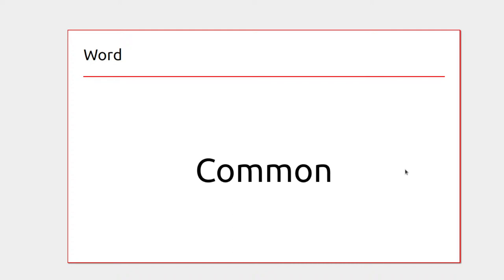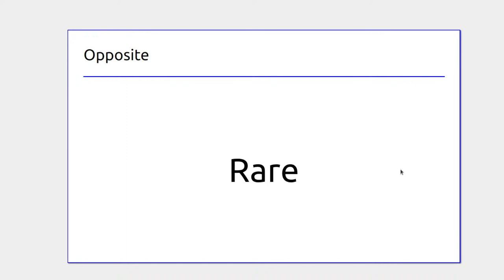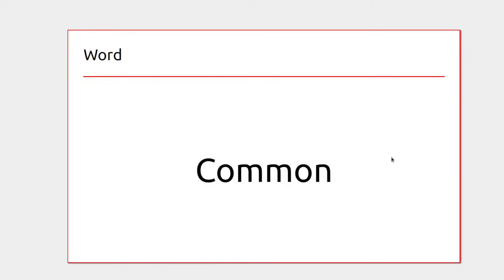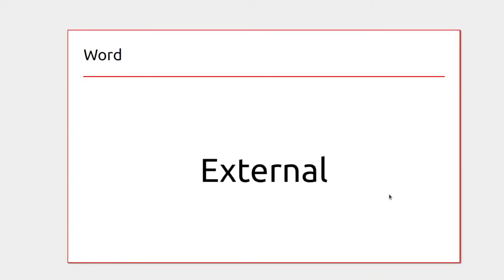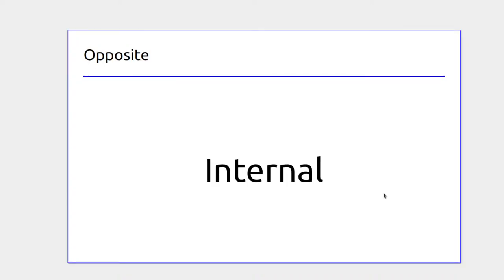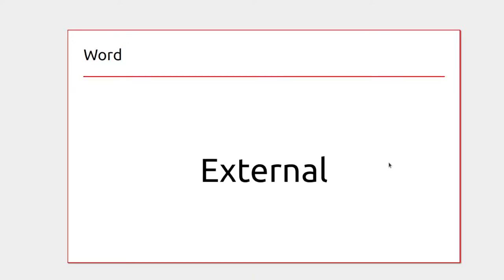For things that are common, they're very frequent. Things that are rare are hard to come across — a common thing might be a plate, while rare might be a diamond wedding ring. External is outside of something and internal is inside — like an internal combustion engine with flames going inside, versus external combustion engines like rockets.